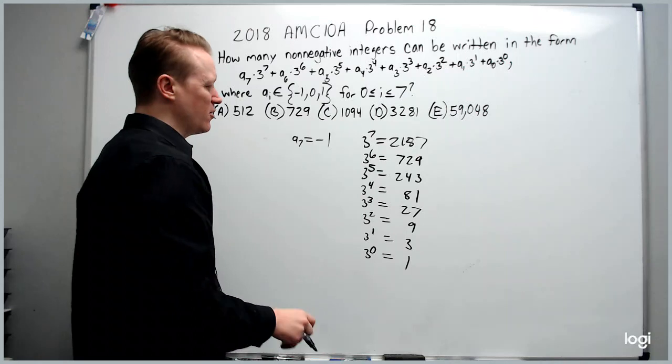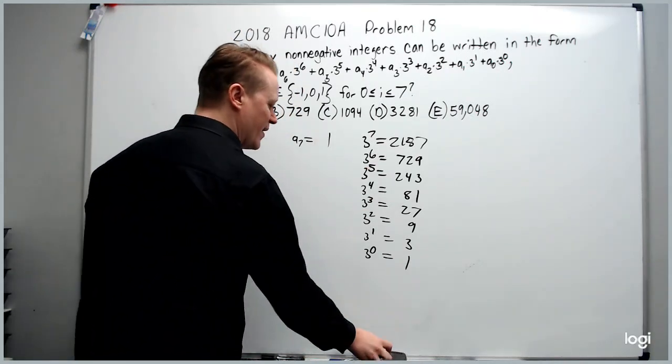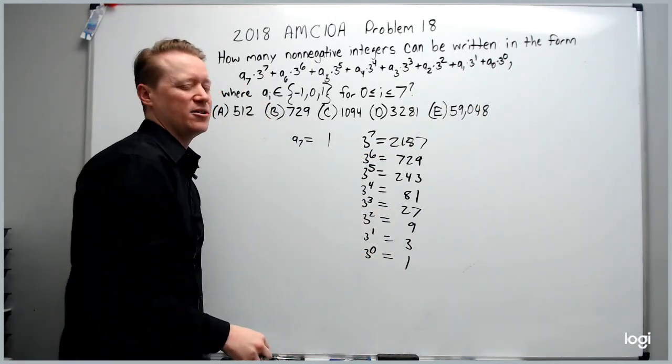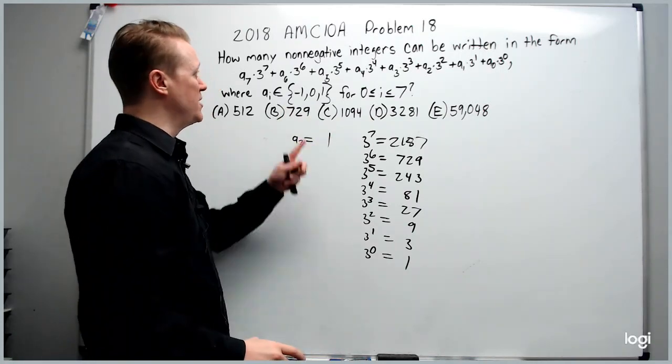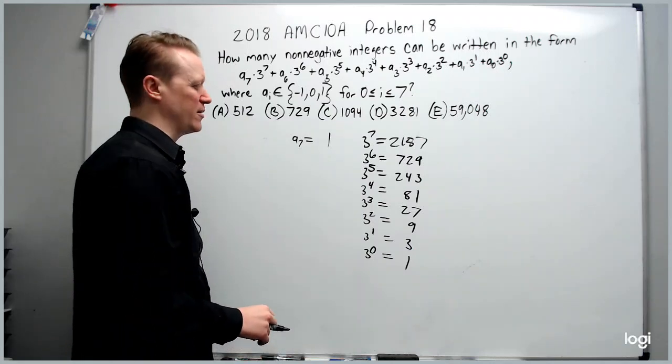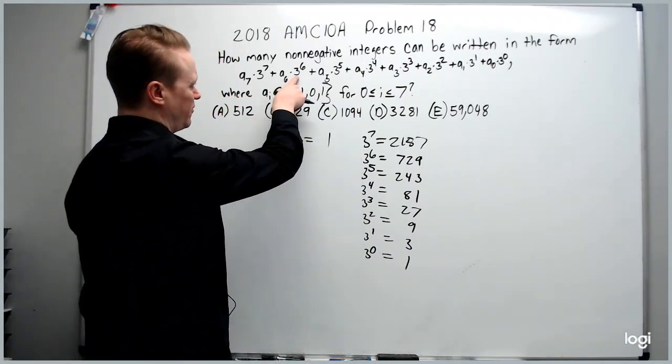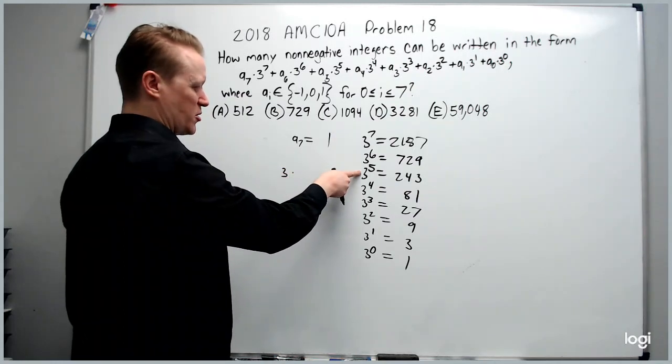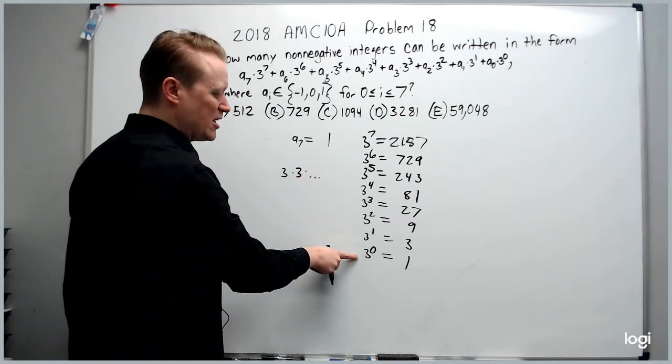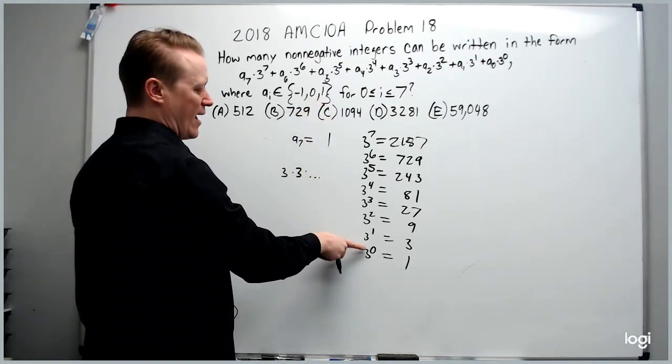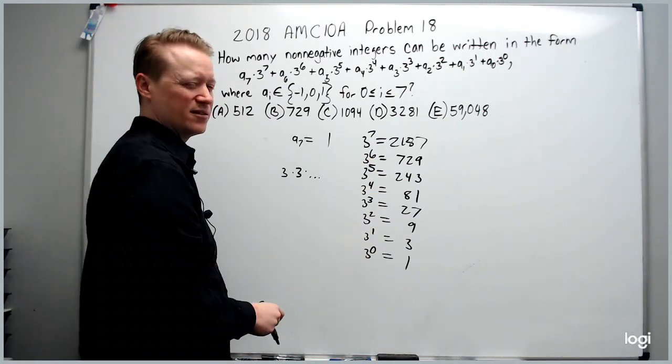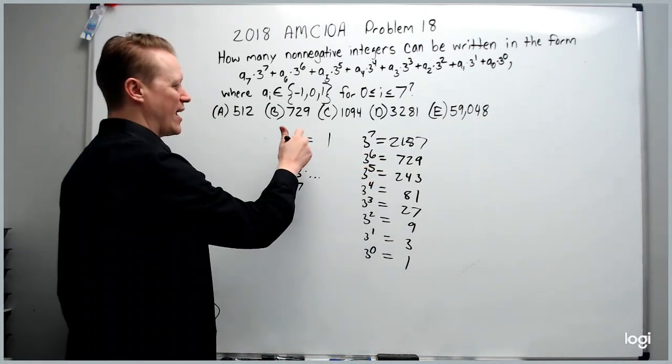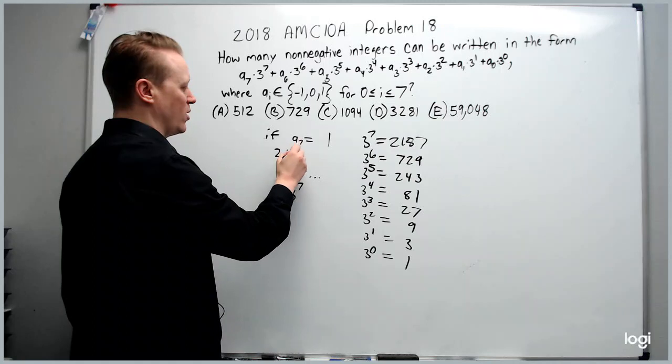Before we explore what happens if it's 0, let's change it to positive 1 then, because obviously if it's positive 2187 you're starting off with, all of the rest of the values can take on whichever value they want, and all such numbers will be a non-negative integer. Then that means we have how many choices for the coefficient of 3 to the 6th? We have 3 choices. So those 3 choices then times the 3 choices we have for 3 to the 5th, and so on. Each of these has 3 choices for negative 1, 0, and 1. How many of these are there? From 6 to 0 there are 7 numbers. So you're going to have 3 to the 7th choices, and we've already calculated that. If a sub 7 is 1, you get 2187 such numbers.